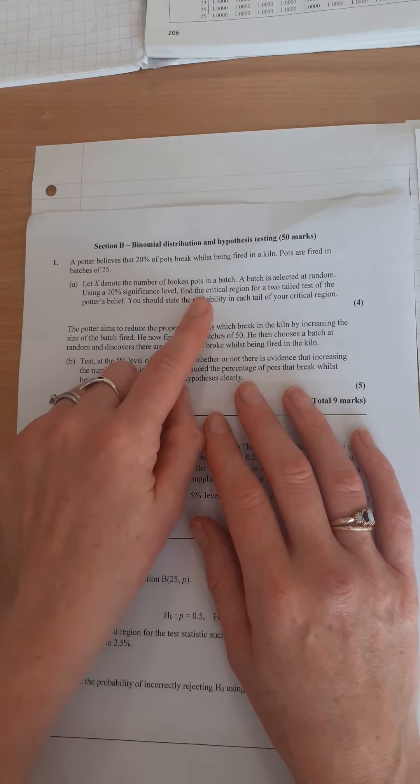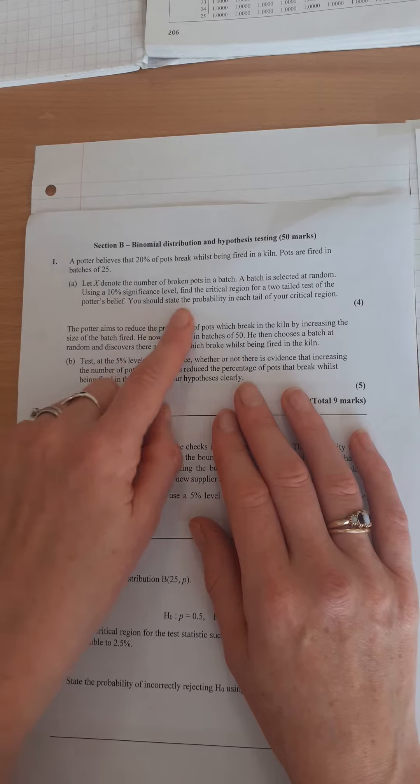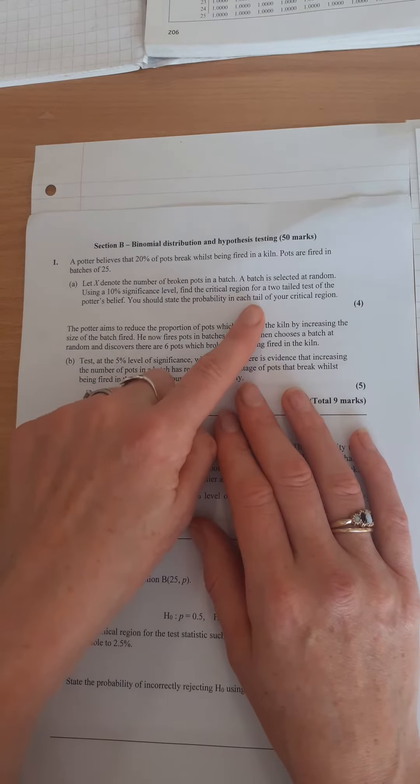And this question is going to ask us to find the critical region for a two-tailed test of the Potter's belief and state the probability in each tail of your critical region.